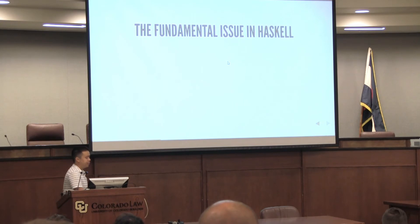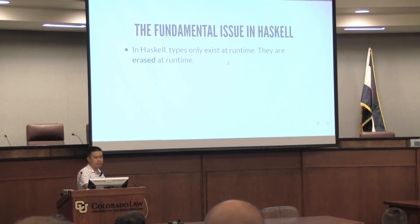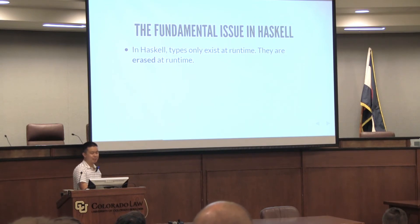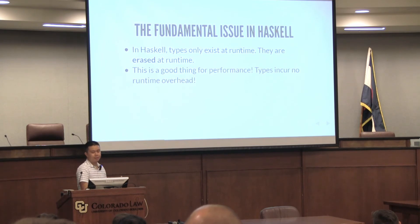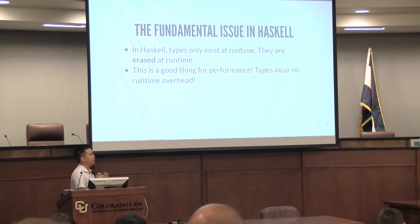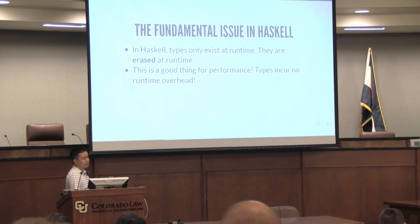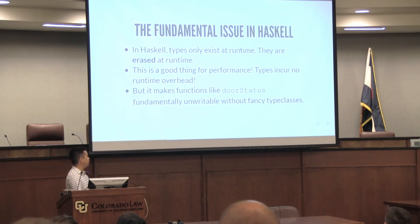So, the fundamental issue in Haskell — the reason why this doesn't work, the reason why we can't make this work normally — is because types only exist at compile time. They're erased at runtime. It means that the types in Haskell are used just to type check, and as soon as they've type-checked your program, GHC removes them — they're gone, they're eliminated from the world. At runtime, there are no types at all. So it's good for performance — types with no overhead. If you're using Python or even Java or Ruby, your types are actually more like runtime tags, but in Haskell you have no runtime type representation. So it makes getting door status really impossible without type classes that are kind of contrived and fancy.